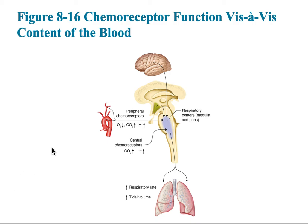Chemoreceptors sense oxygen levels, carbon dioxide levels, and hydrogen levels in the blood. When these chemicals are out of balance — for example, if oxygen is low and carbon dioxide is high — it triggers an increased respiratory rate as well as increased tidal volume, the amount of air going in.